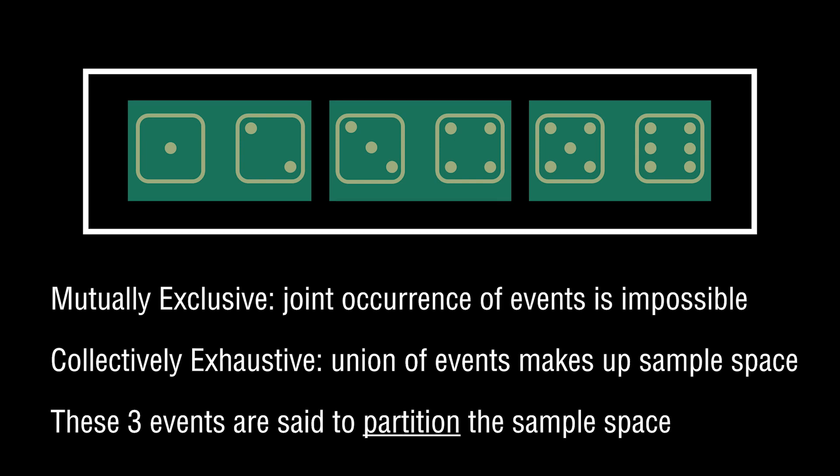In this particular case where each of these events is mutually exclusive and collectively exhaustive, these events are said to partition the sample space. Mutually exclusive means the joint occurrence of events is impossible. Collectively exhaustive means you're exhaustively covering the sample space. Under the condition that both of these occur, you partition the sample space.